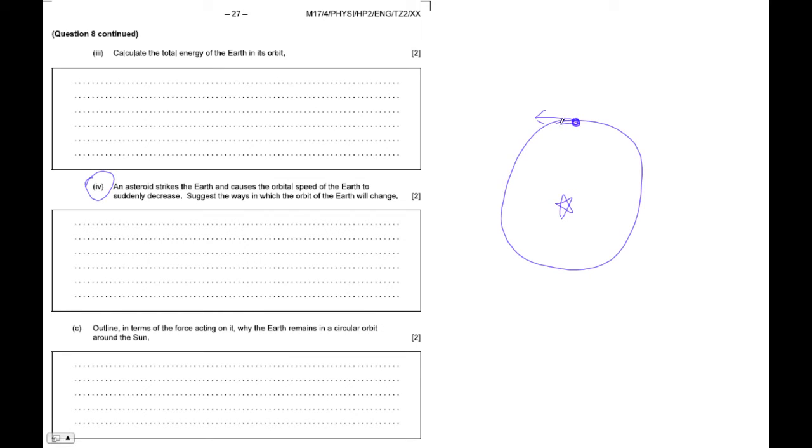So what happens is we fall toward the sun and we speed up and then we get flung out, which slows us down. We'll end up going through that same spot where the asteroid hit us, but our orbit will become, if it was circular, it'll become more elliptical.